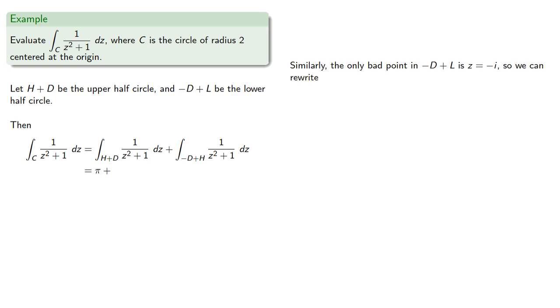Similarly, the only bad point in negative D plus L, the lower half circle, is z equals negative i. So we can rewrite our integrand, and we find 2πi times f(-i). And so the value of the integral is zero. And we did all this work for nothing.